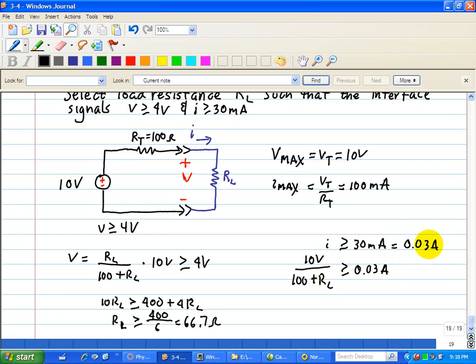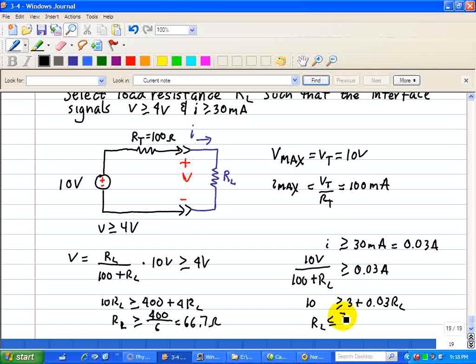So, cross multiplying again, that yields 10 greater than or equal to 3 plus 0.03RL. That yields RL less than or equal to 7 divided by 0.03, or 233 ohms.